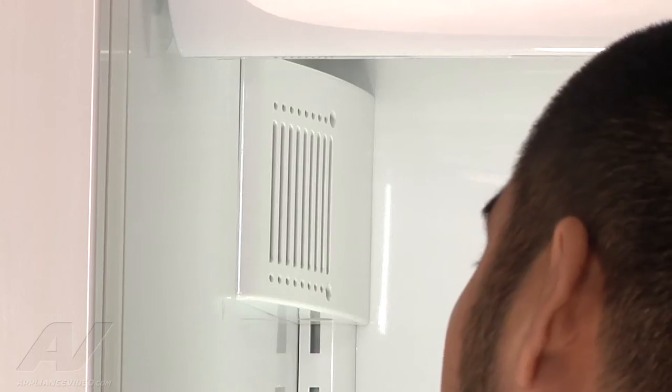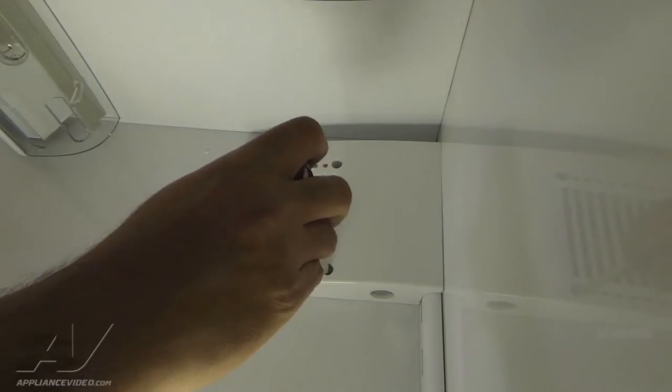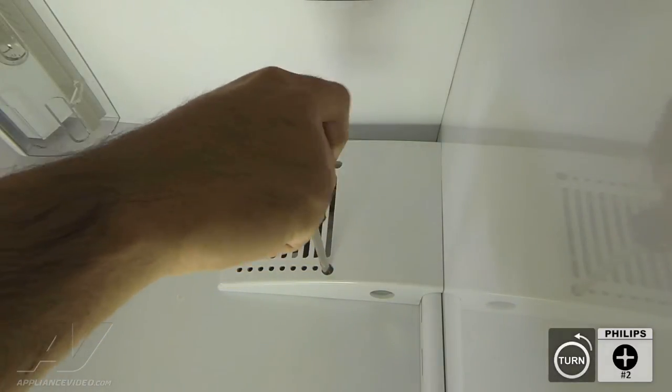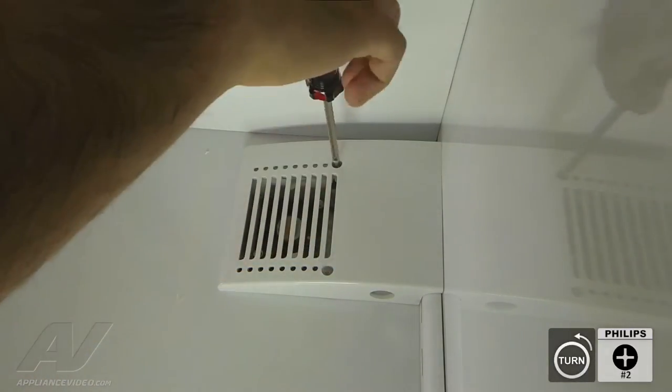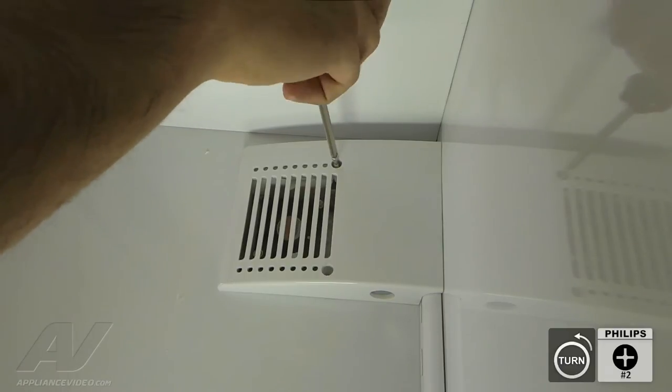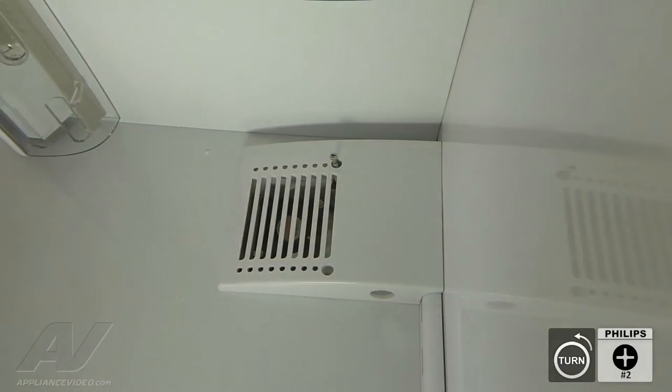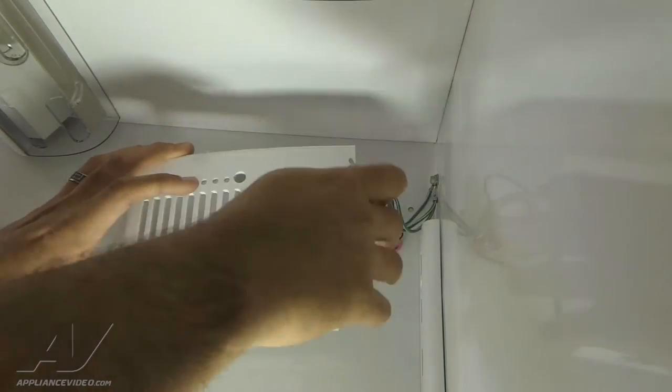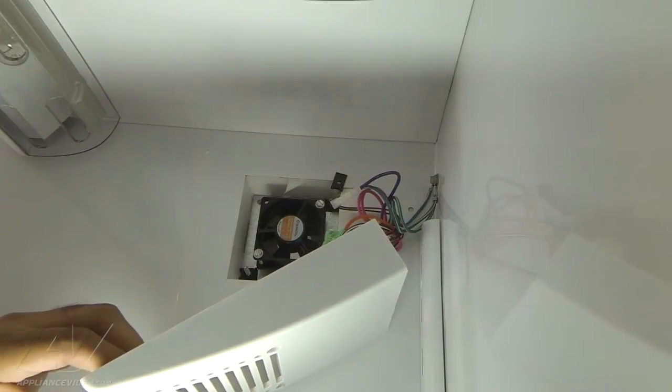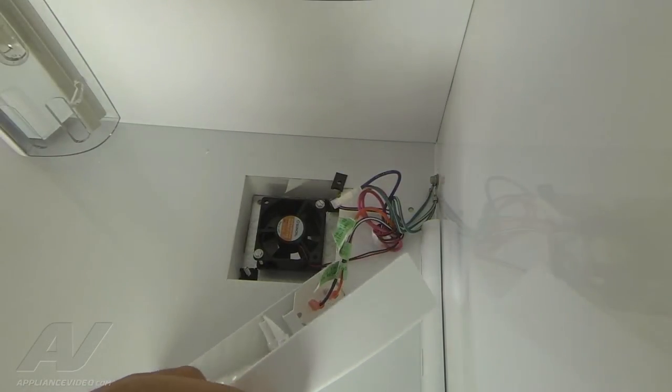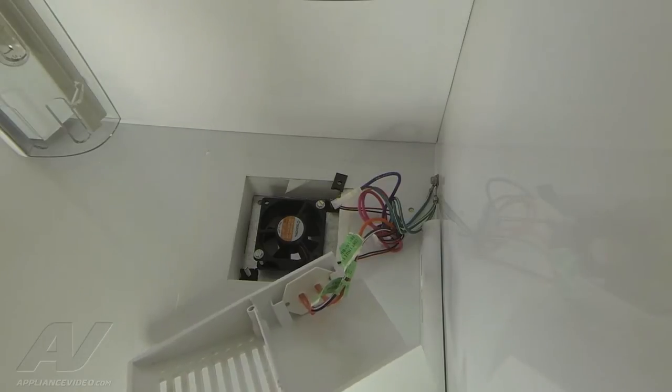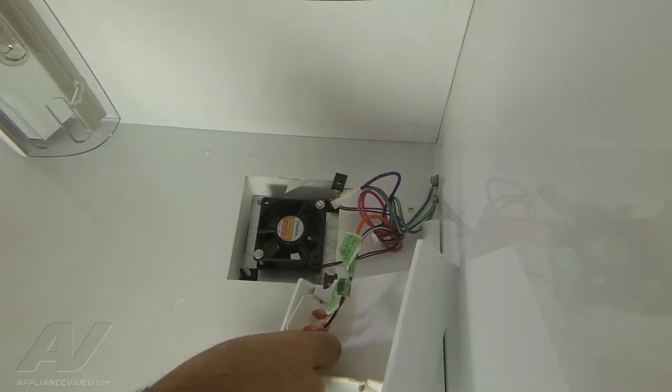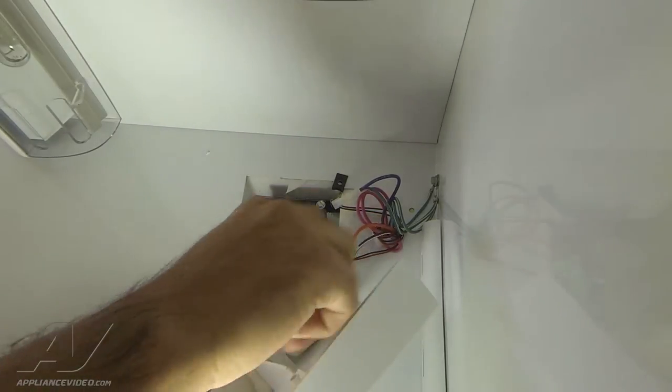To remove the fan cover in the fresh food section, remove the two Phillips-style screws just like in the freezer section. Once the cover has been removed, all the wires are exposed as well as the thermistor. To get the cover out, slide the thermistor out of its holder.